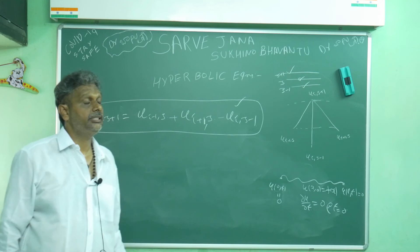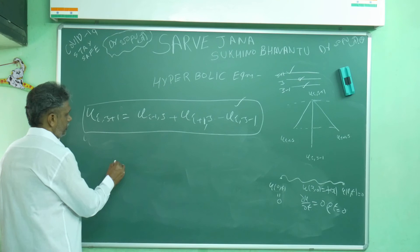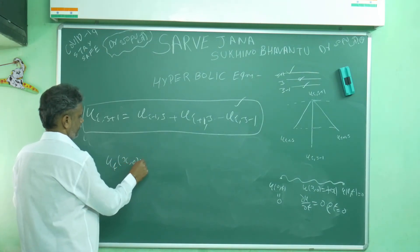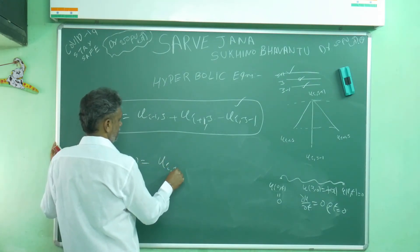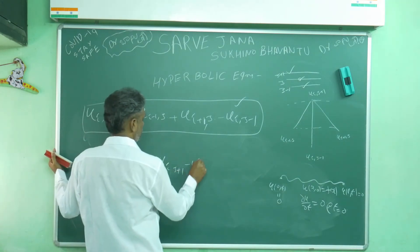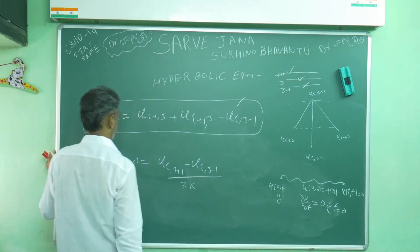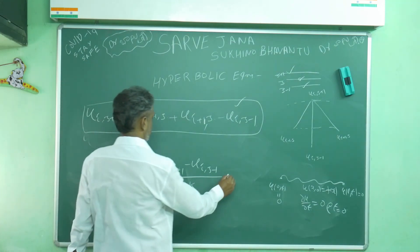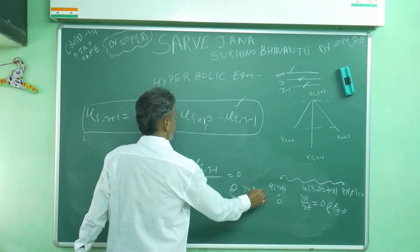The other initial condition is ∂u/∂t = 0 at t = 0. Using central difference: (u(i,1) - u(i,-1)) / 2k = 0 at j = 0. Since 2k ≠ 0, we get u(i,1) = u(i,-1).